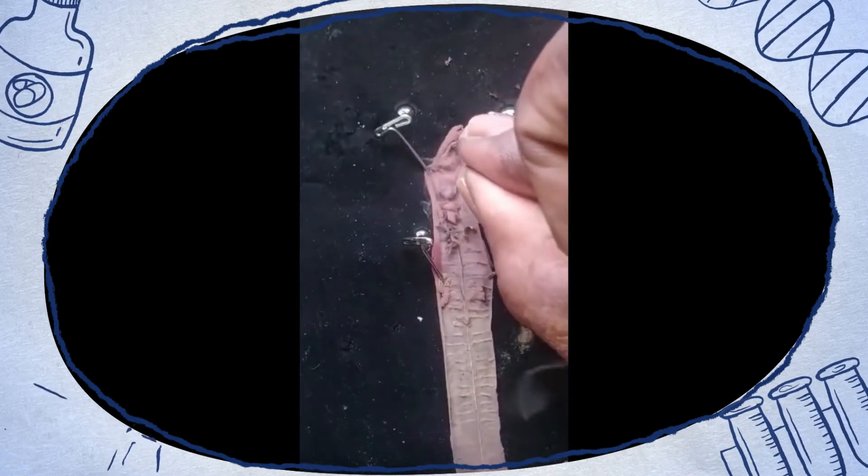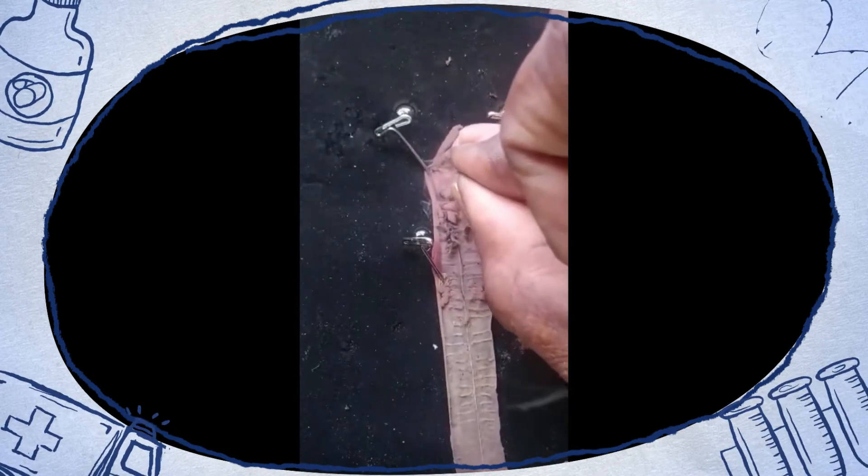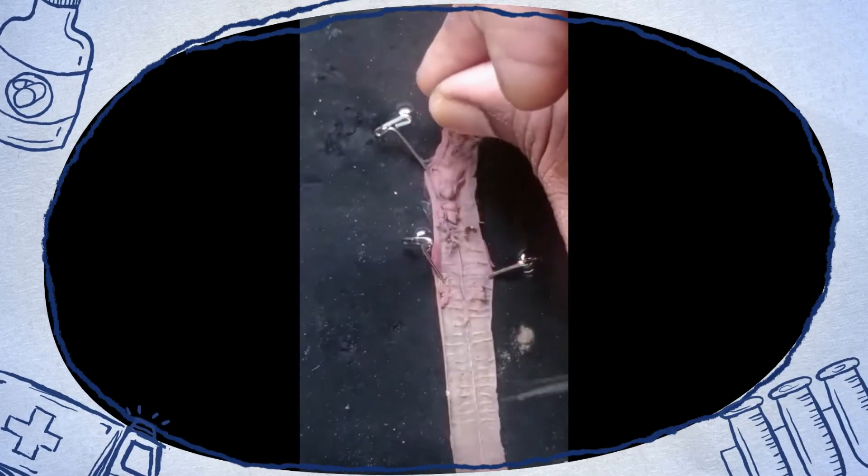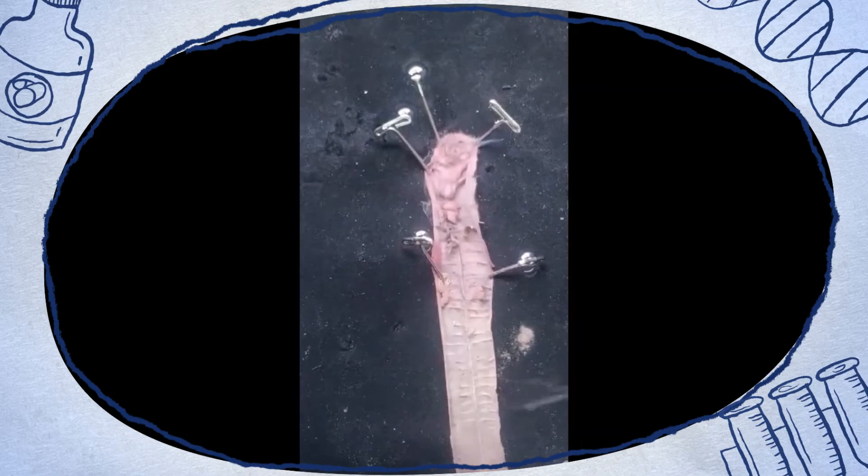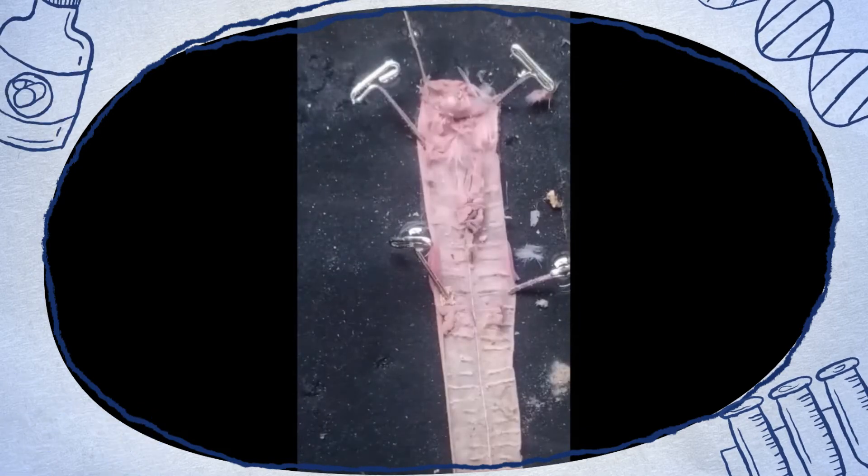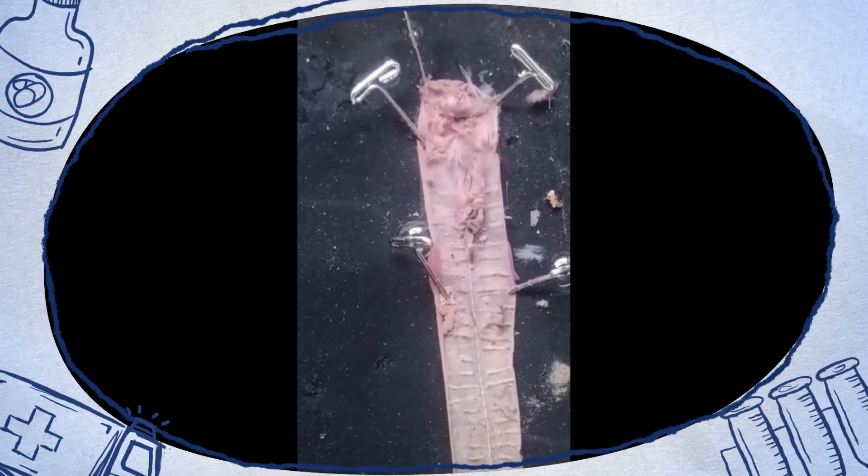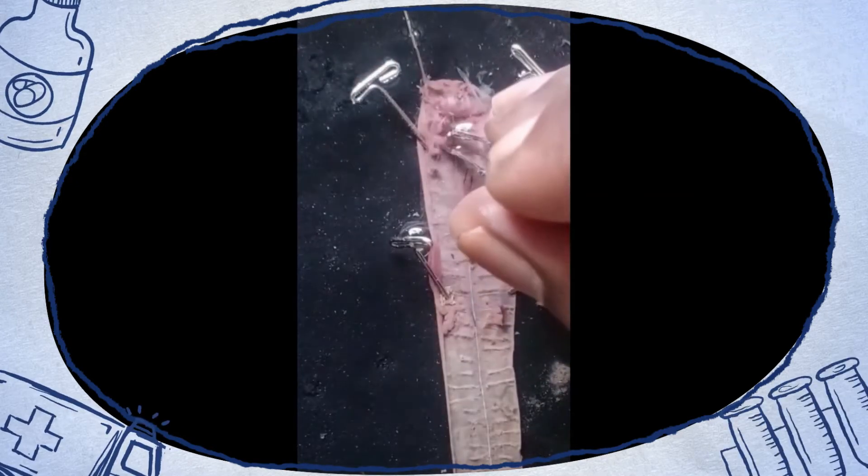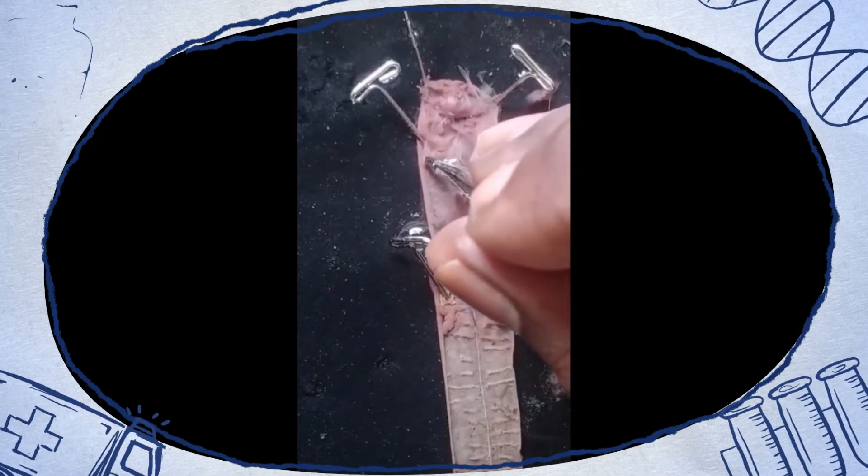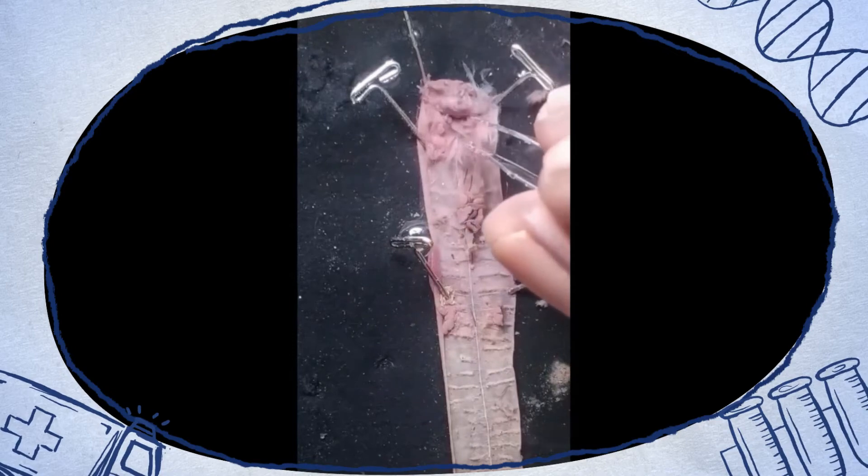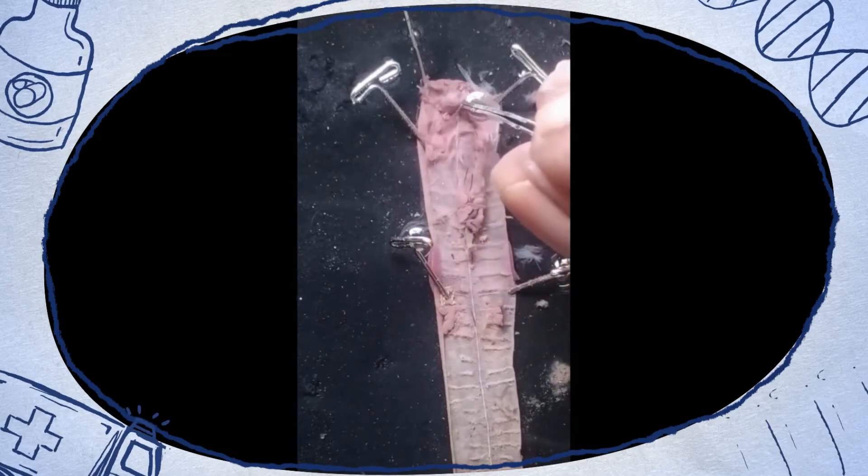As you open it completely, you will be able to locate the nerve ring at the anterior end.